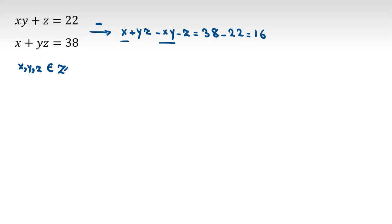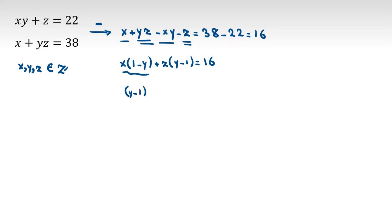Now, x and x cancel. If I factor out from x it will be 1 minus y. Here, if I factor from z, it will be y minus 1, giving (y minus 1)(z minus x) equal to 16. Factoring out (y minus 1), the first term is negative x and the second is z, so (y minus 1)(z minus x) equal to 16.